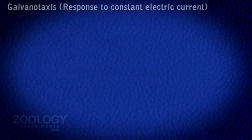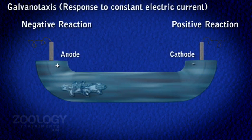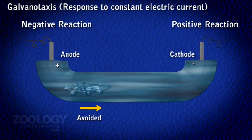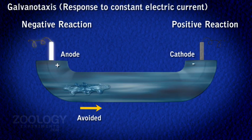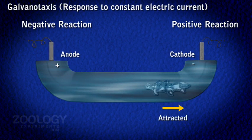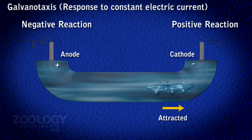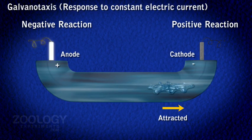Galvanotaxis: In water, if an electric current is passed through where Amoeba is present, it stops moving, withdraws, and becomes globular. In a weak electric current, it moves towards the negative pole — that is, the cathode — and avoids the positive pole, that is, the anode.